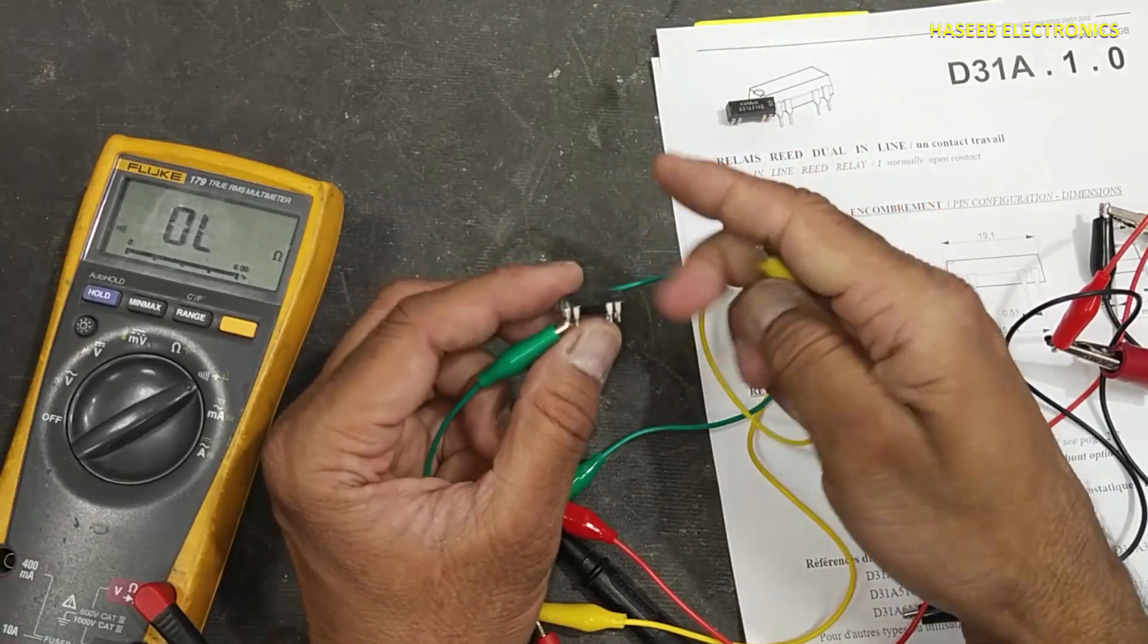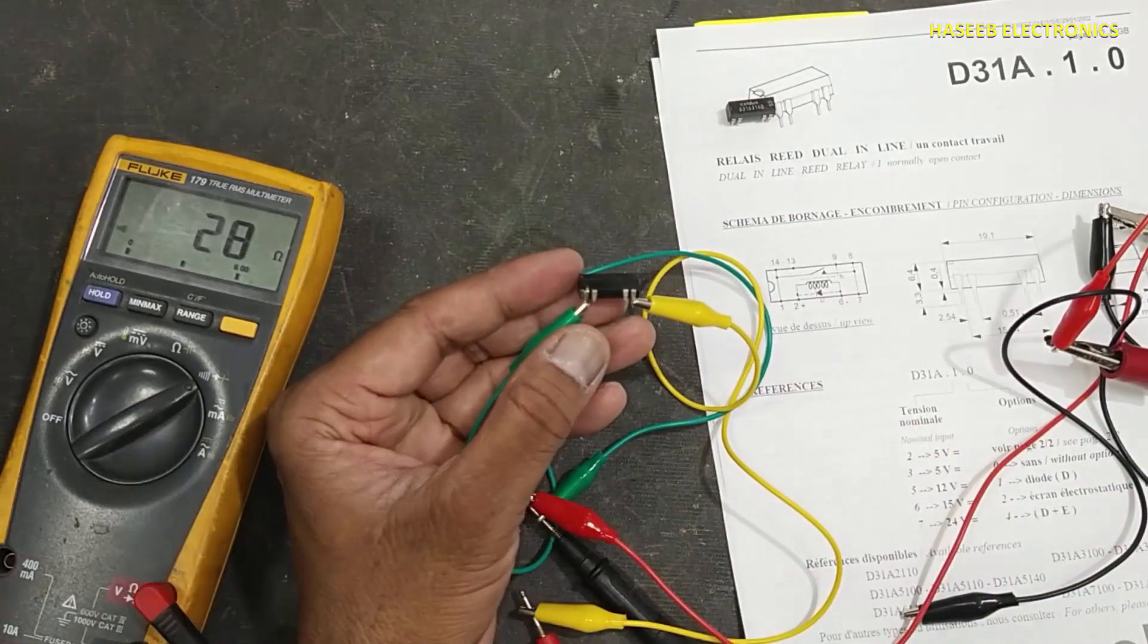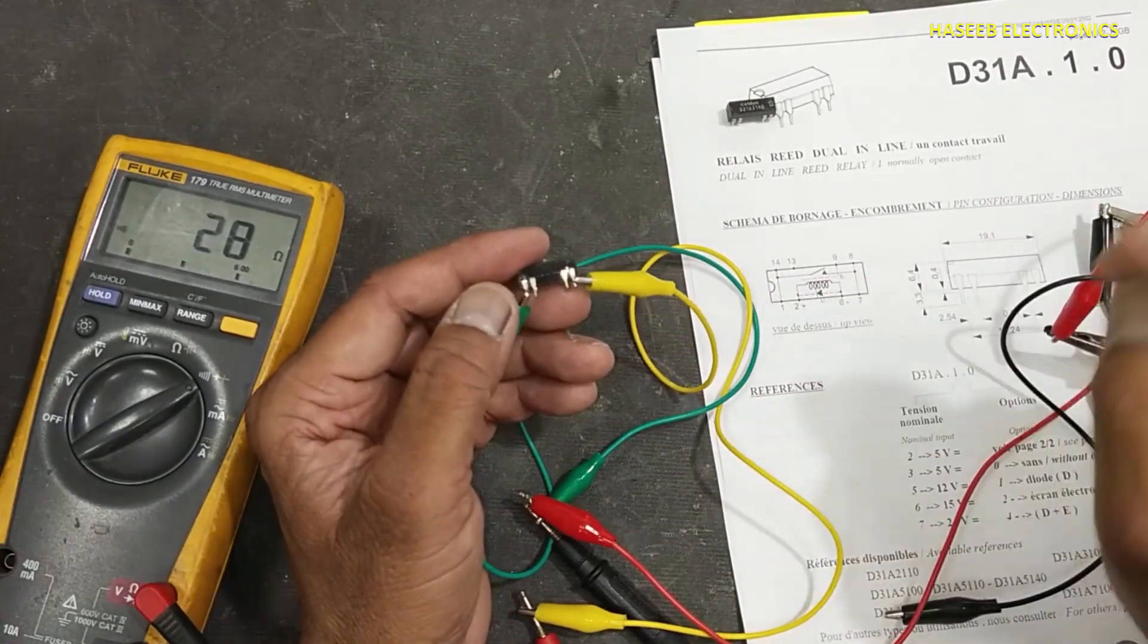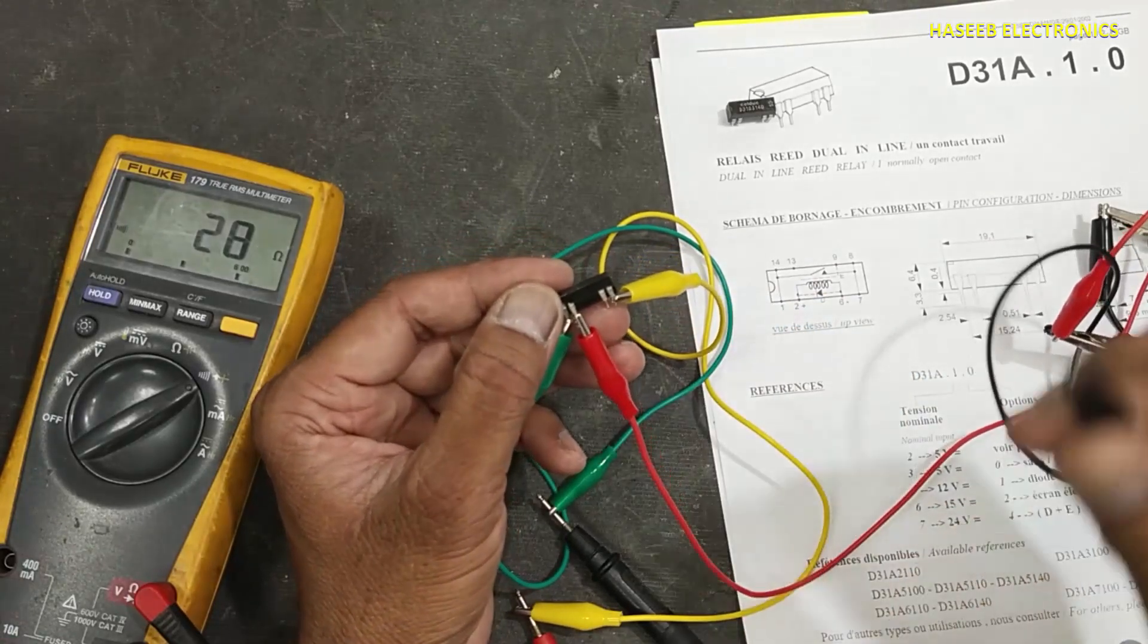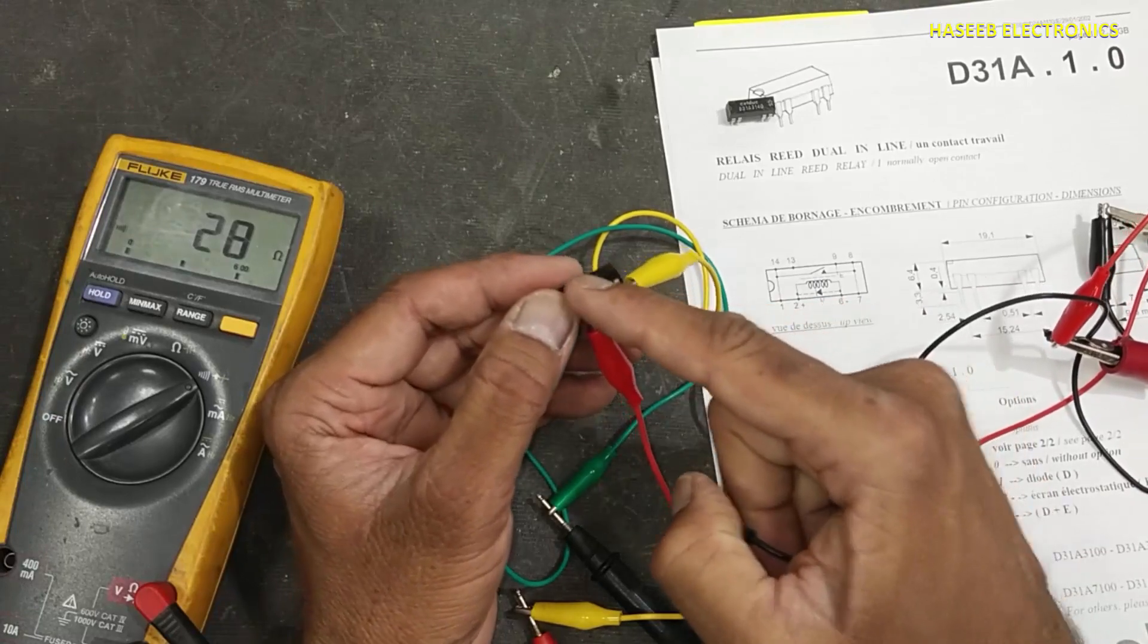Connect the multimeter between pin number 1 and 7. It is directly turned on, that means this contact is bad. Even when we apply voltage, it has no effect. So this relay is bad.